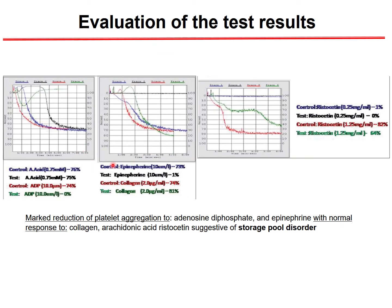In another example, there is marked reduction of platelet aggregation induced by ADP and epinephrine, but normal collagen and normal ristocetin aggregation. This pattern suggests the patient has a platelet storage pool disorder.